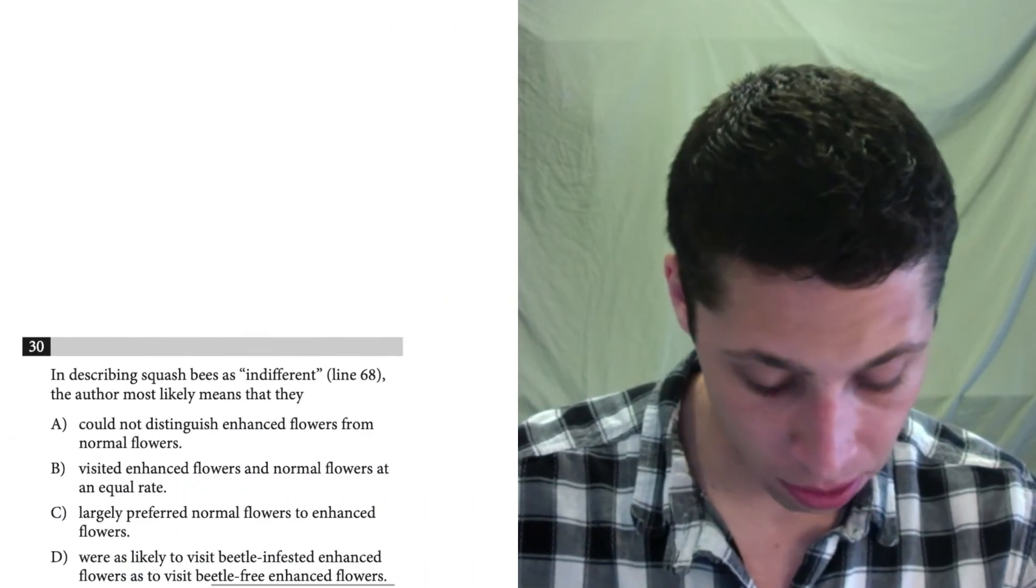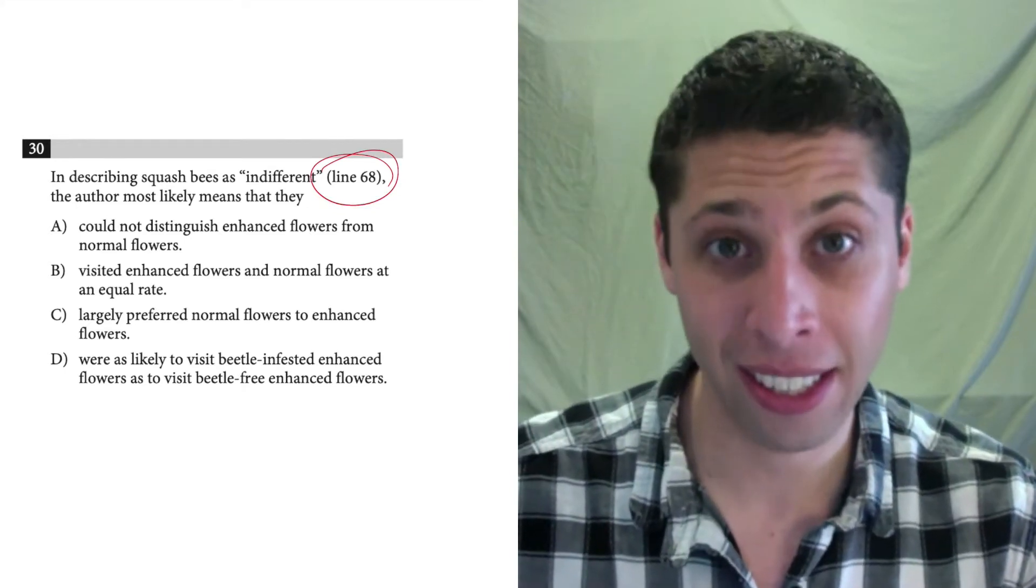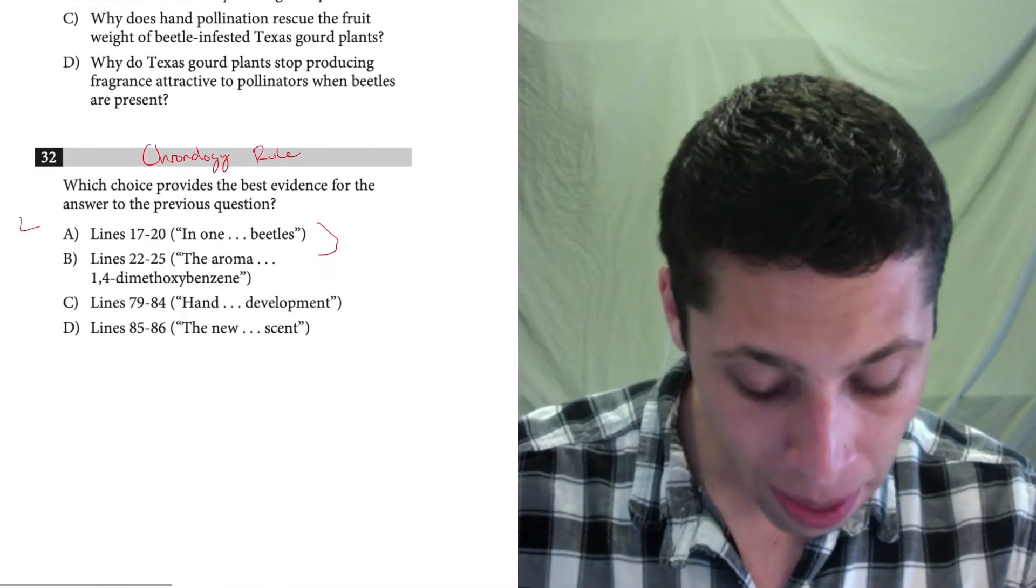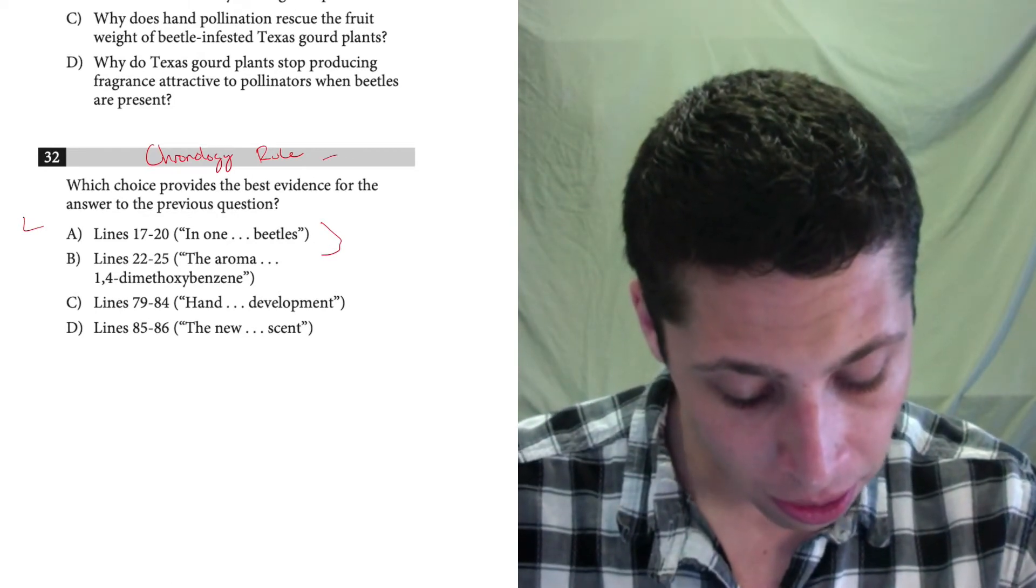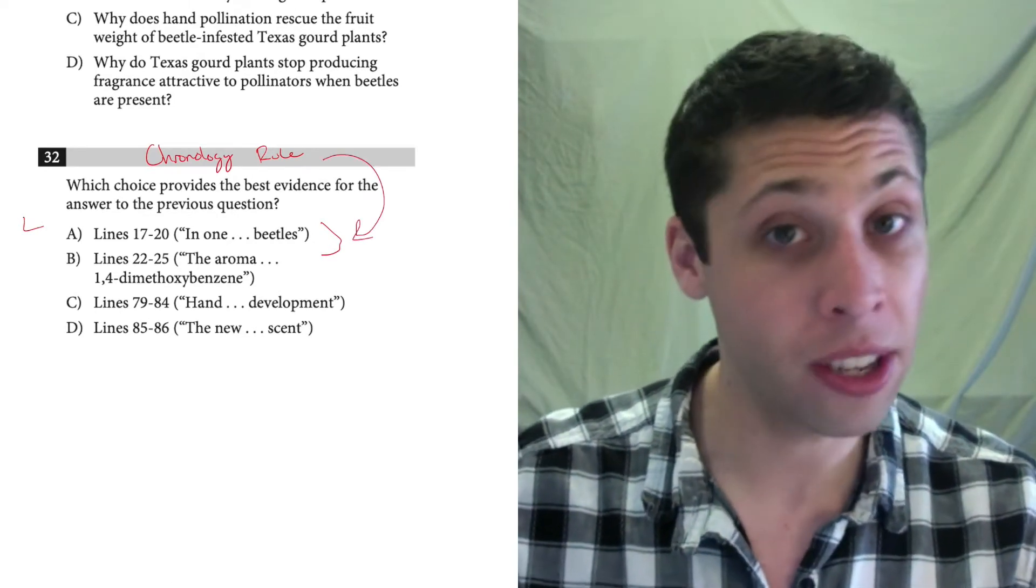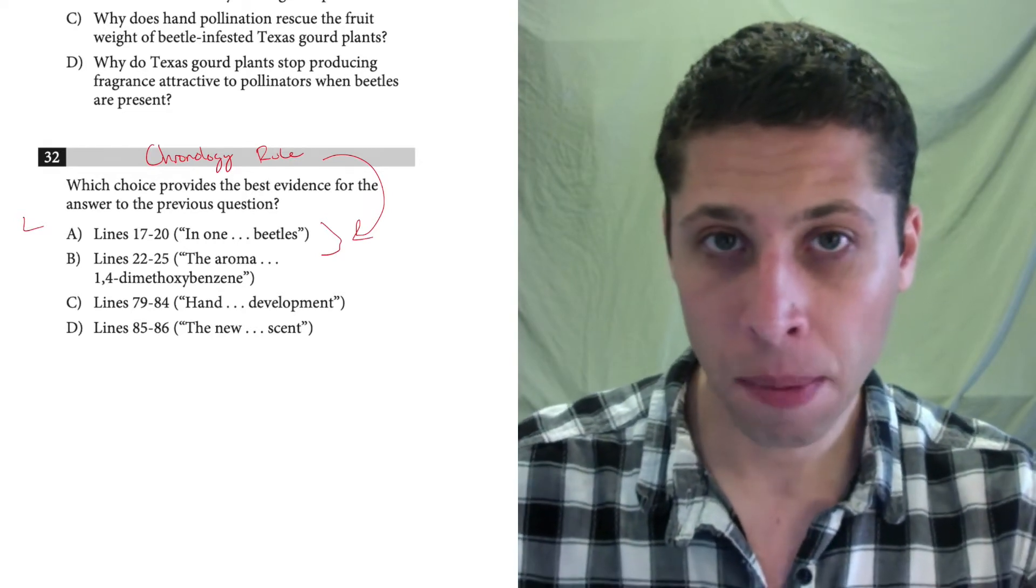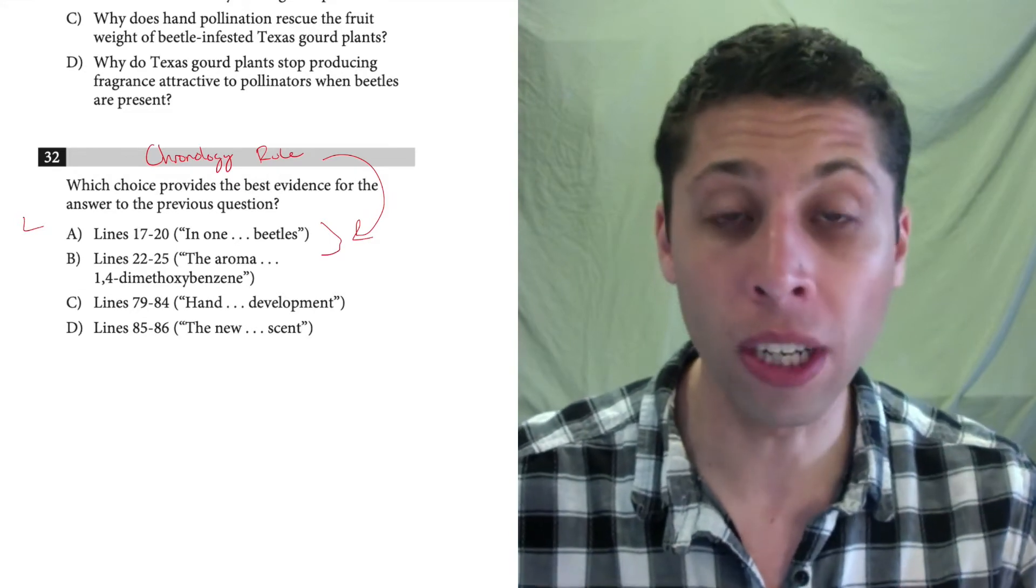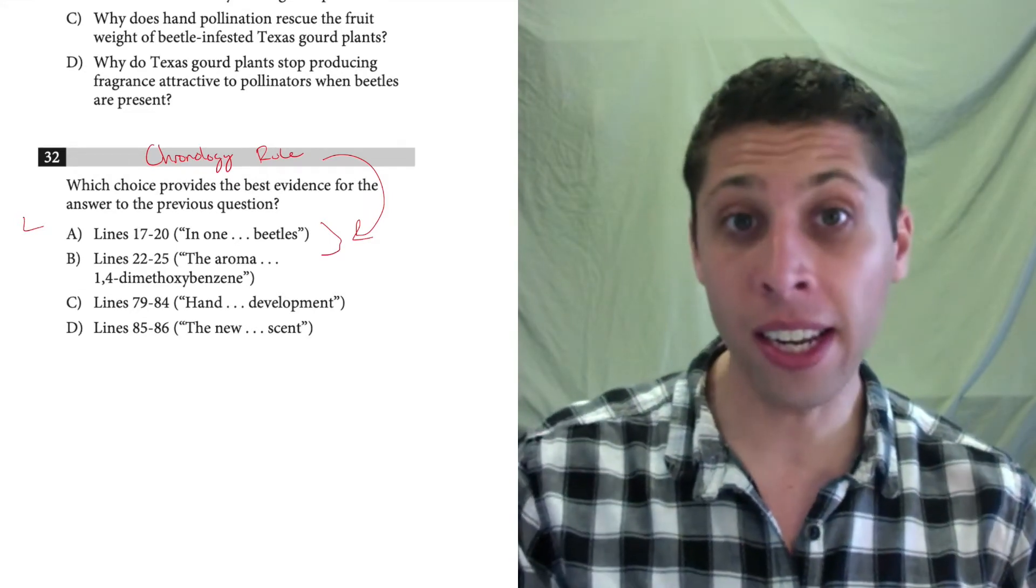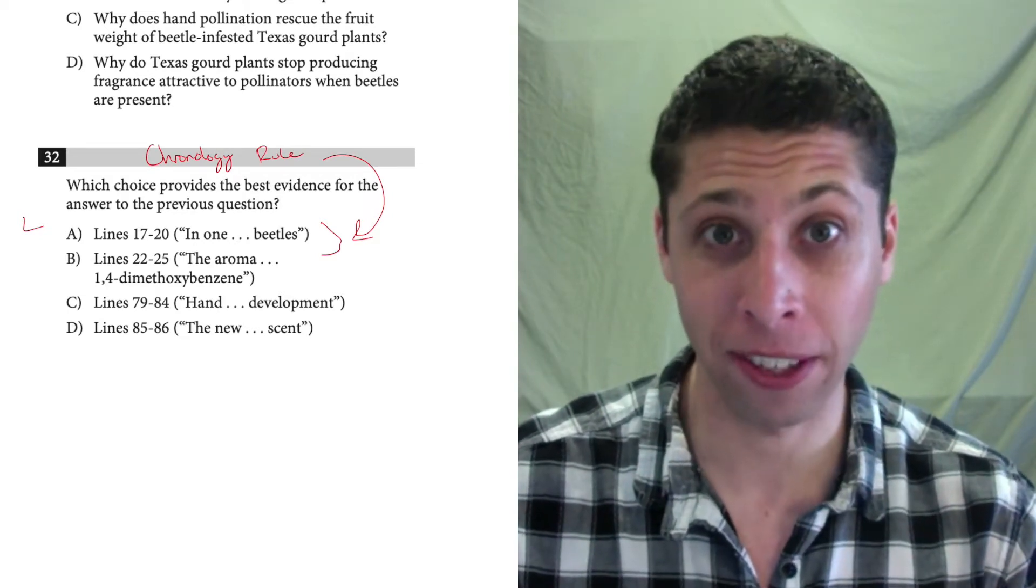And sure enough, question 30 had line reference 68. So that means it's unlikely that the line reference here in A and B is going to be right. Now, obviously they break the rule. We've seen that once on this test already. But it's a good indicator that if you are totally confused, you at least have a good reason to guess from C and D as opposed to A and B. But we're still going to read everything. We have to read everything just in case.